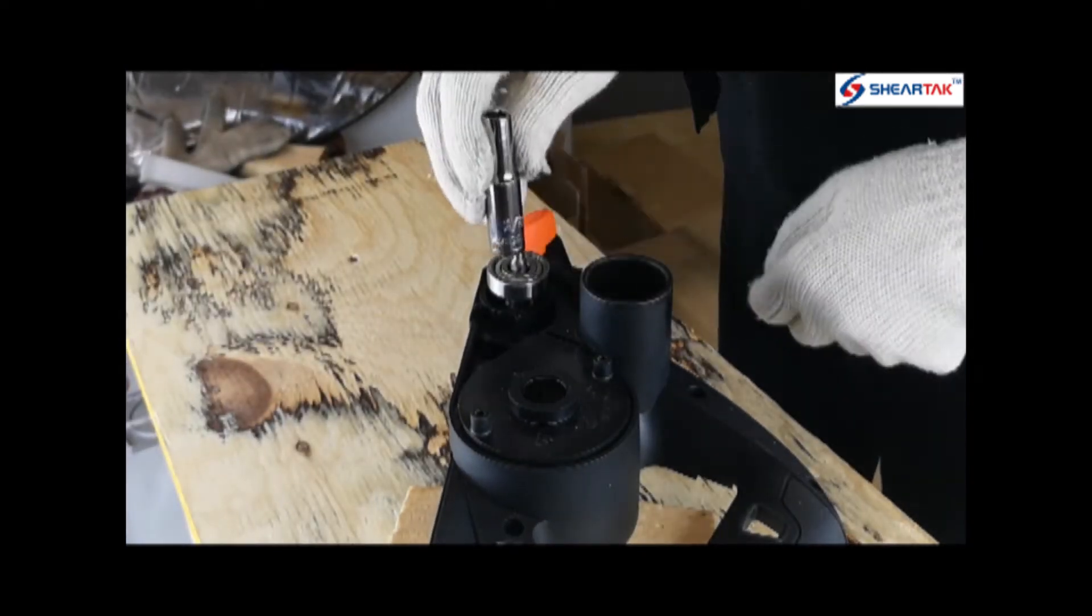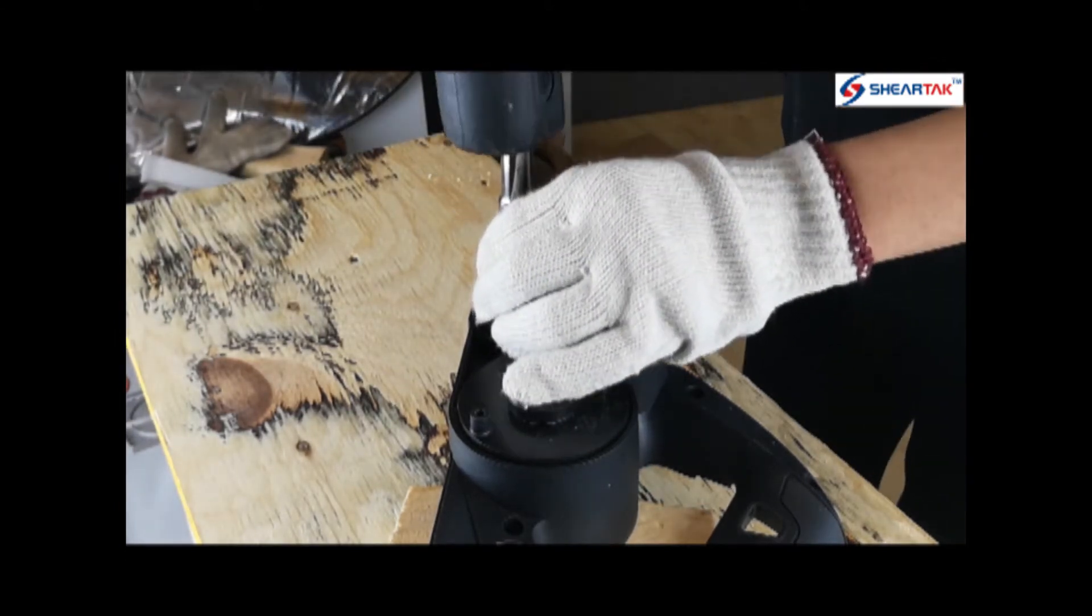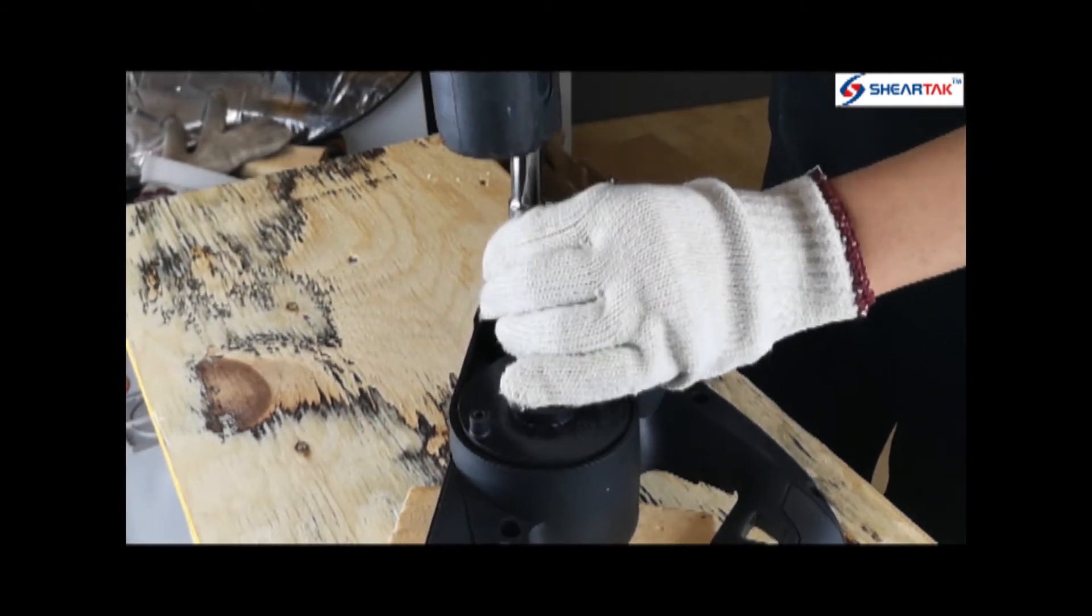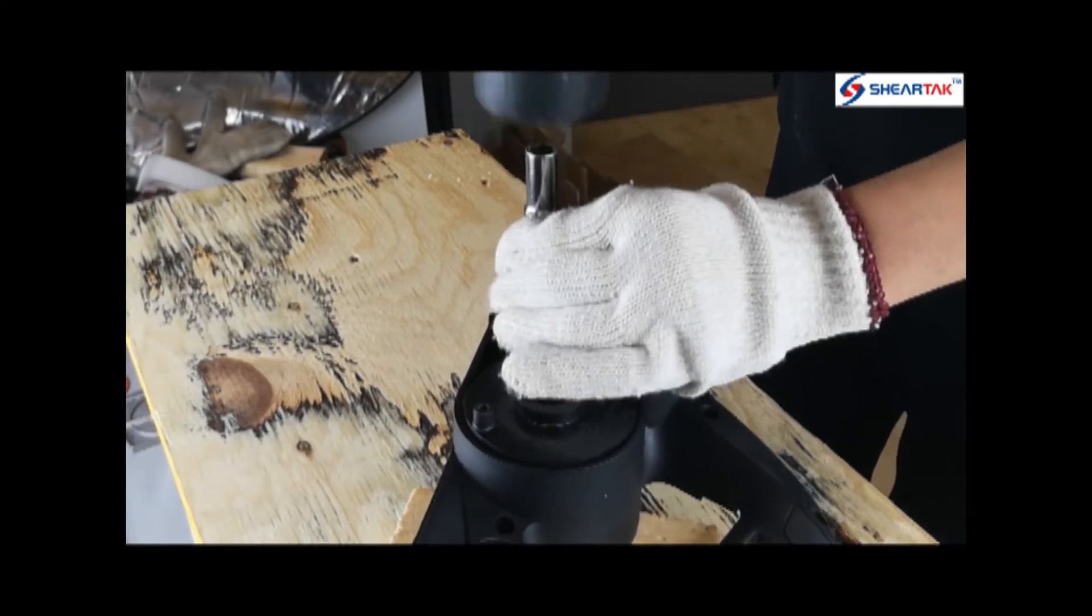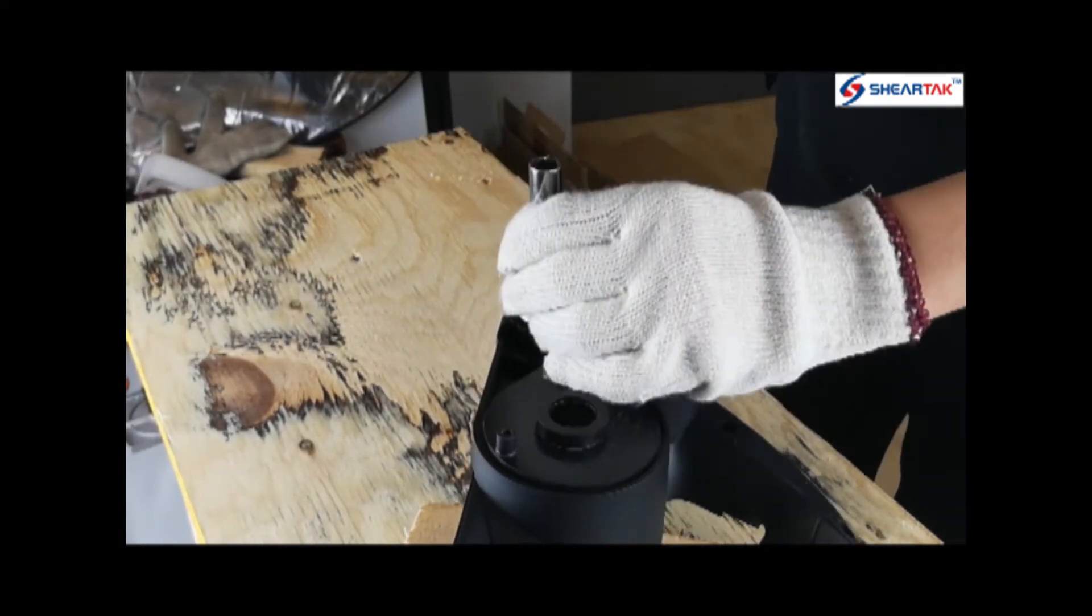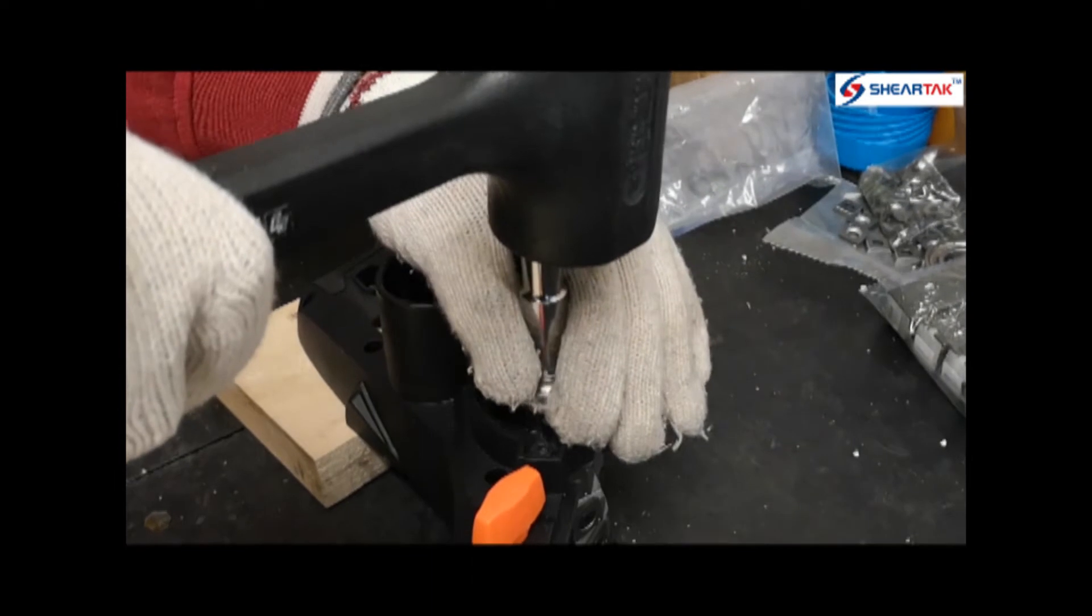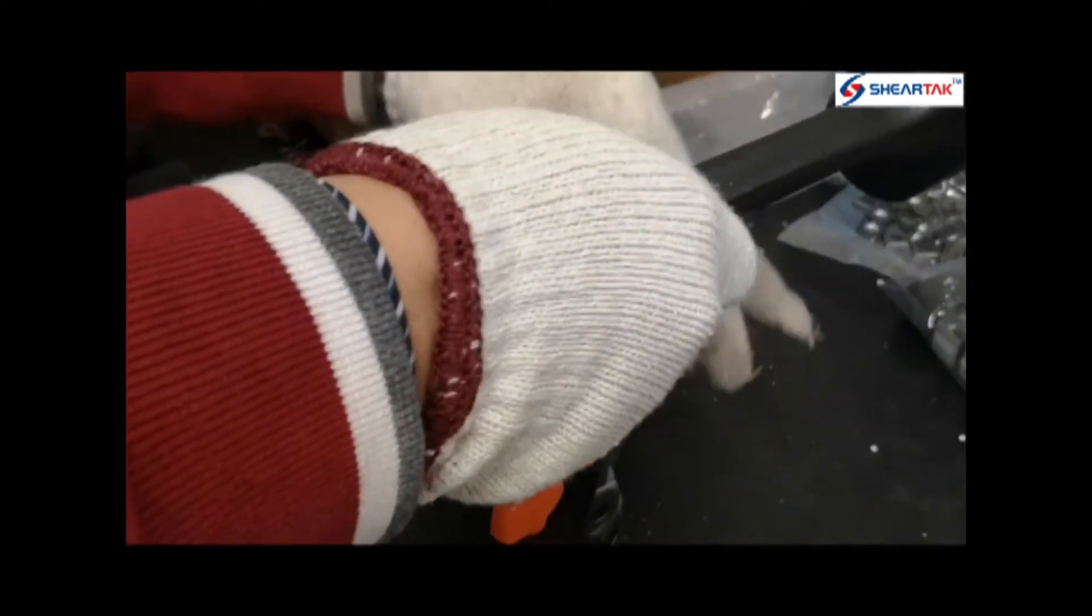Use a half inch deep well socket. Strike the socket with a rubber mallet. Repeat the process until the bearing is in place.